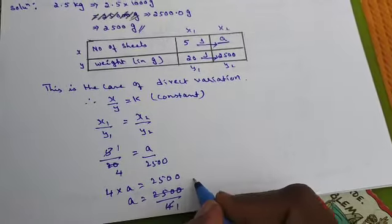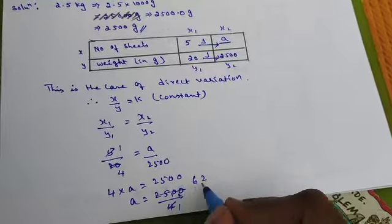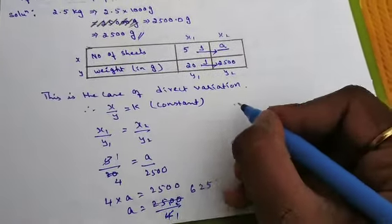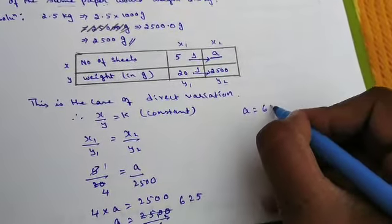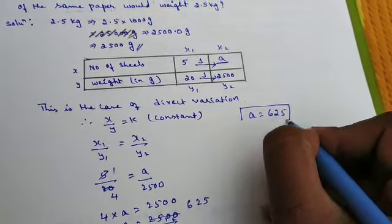Cancel: 4 ones are 4, 6 are 24, 1 remains; 4, 2s are 8, 2 remains; 4, 5s are 20. Then we got A is 625. Put this in a box.